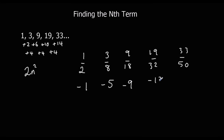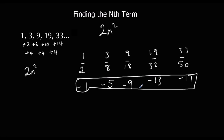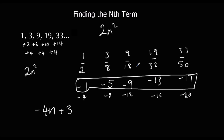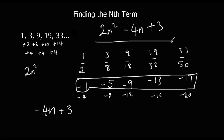Subtracting two n squared leaves: minus one, minus five, minus nine, minus thirteen, minus seventeen. This sequence goes down in fours, so it's a minus four n sequence. The minus four times table gives: minus four, minus eight, minus twelve, minus sixteen, minus twenty. To get from minus four n to our sequence we add three. So the answer is two n squared minus four n plus three.